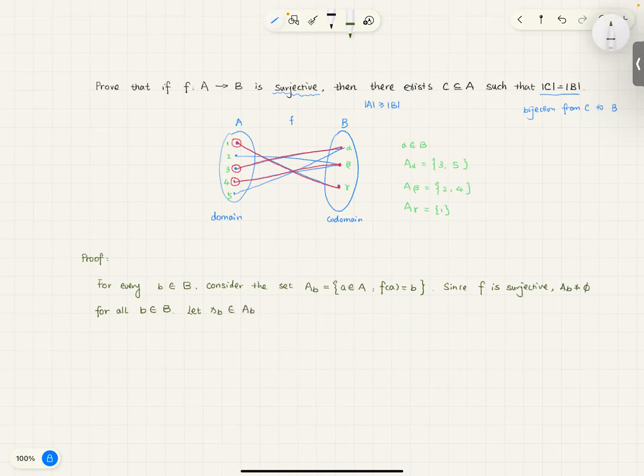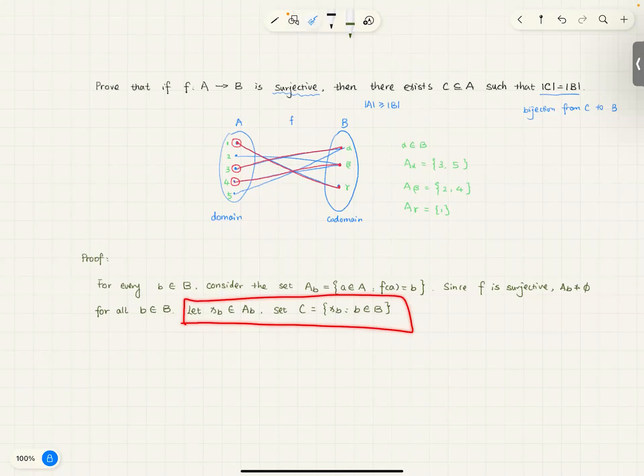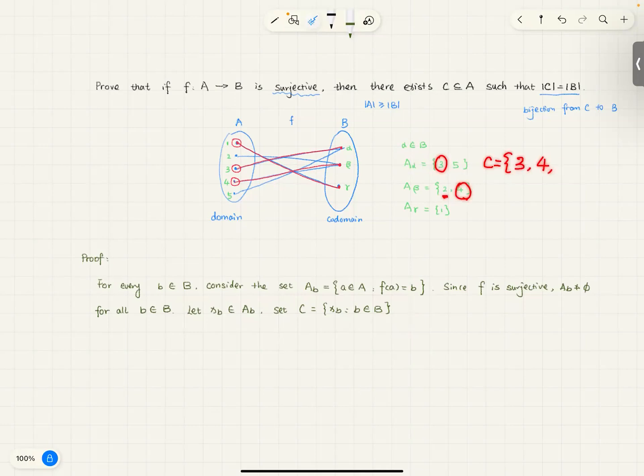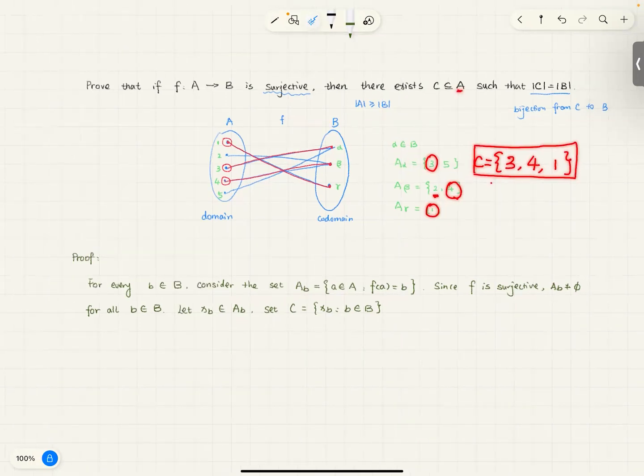So, let x_b, choose one element x_b for A_b. So, I'm picking one element there. And set C. So, now I'm going to define my C. The C is going to be x_b, where b is in B. So, using my above demonstration to show you what we're doing here is saying, well, I'm going to pick one element from here. So, pick one element, let's say it's three, and I'm going to put it in C. Pick one element from here. It doesn't matter which one. Let's say if I pick four, then I'm going to put it here. Pick one element from here. I can only pick one, so I'm going to put it here. So, this is my subset of A, which is C. And in this case, it's going to have the same cardinality of my B.